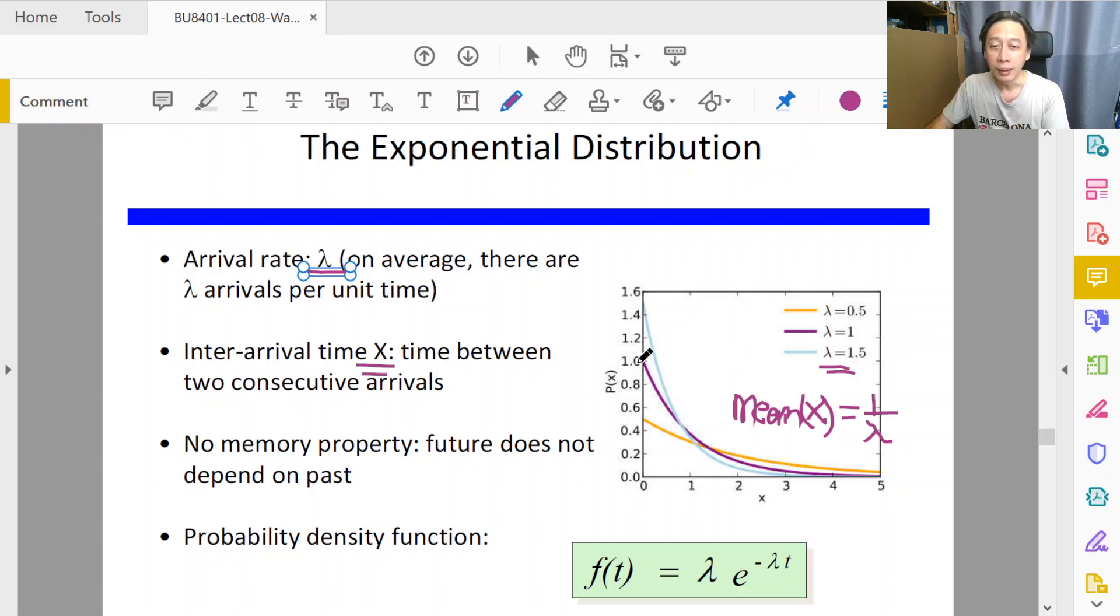So one customer per minute, then we follow the purple curve here. Because exponential is a continuous distribution, we need to integrate. So if we follow through the integration, we'll find that the average will be one over one, and we get one minute being the average separation between customers.